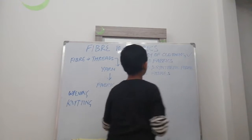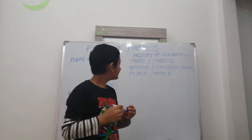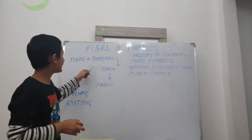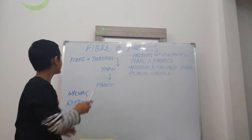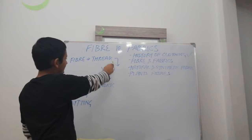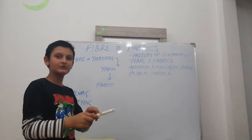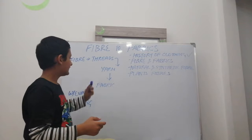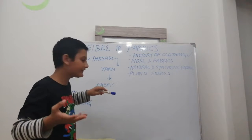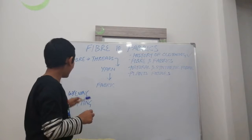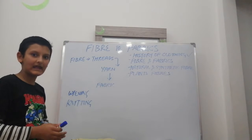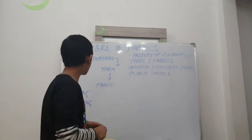Our next topic is fiber and fabrics. I've drawn a diagram here. Fibers are there, and threads are made from fibers. Threads are twisted together to make yarn. Then yarn is converted into fabric by two processes: weaving or knitting.